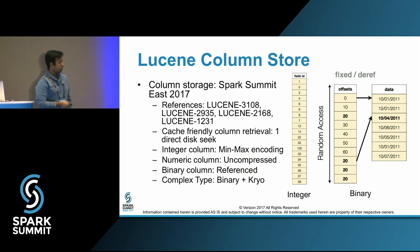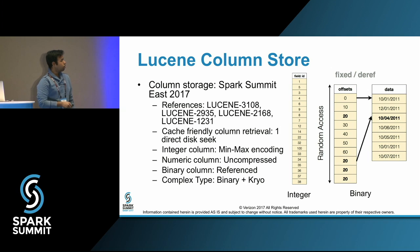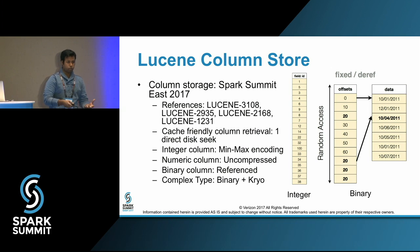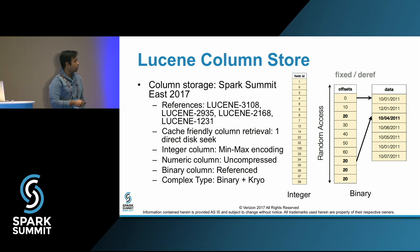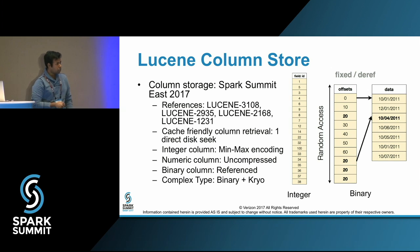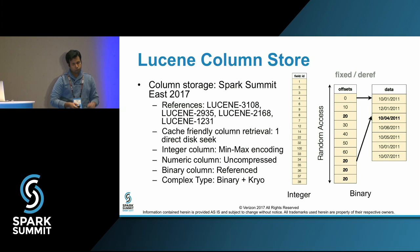There are many different ways a column can be encoded. For an integer column, we can find the min and max, and the whole column gets compressed to min plus the delta — storage for that can be much smaller than storing the whole integer. If the column is a double or float, we store it as uncompressed bytes. Any data type can be stored as a binary column with dereferencing. If it is any complex type, we convert to binary using Kryo and then use the binary flow. Most of these things are already implemented in Lucene.